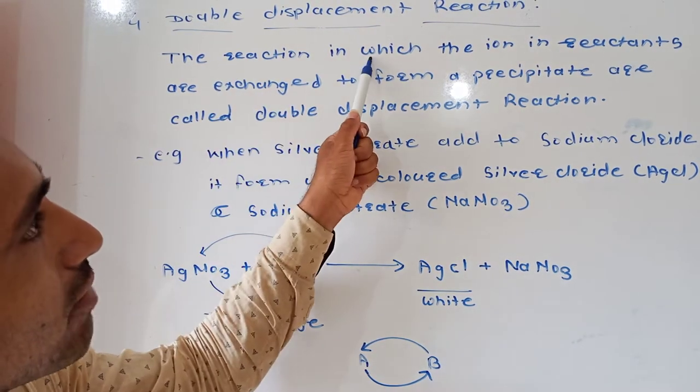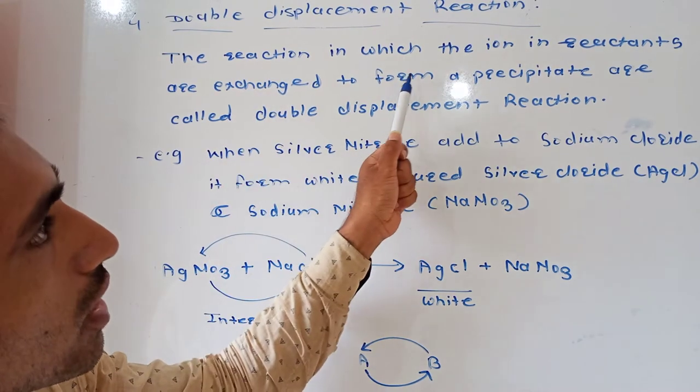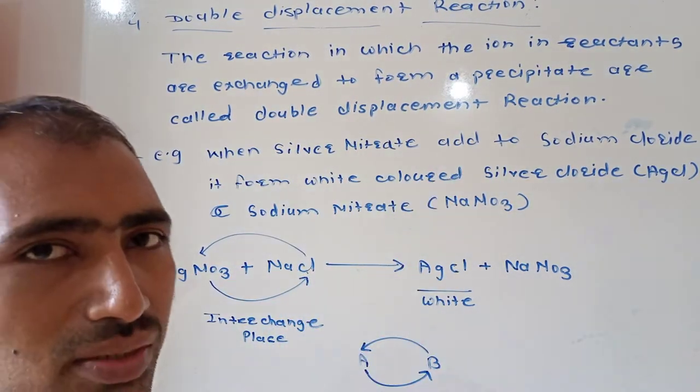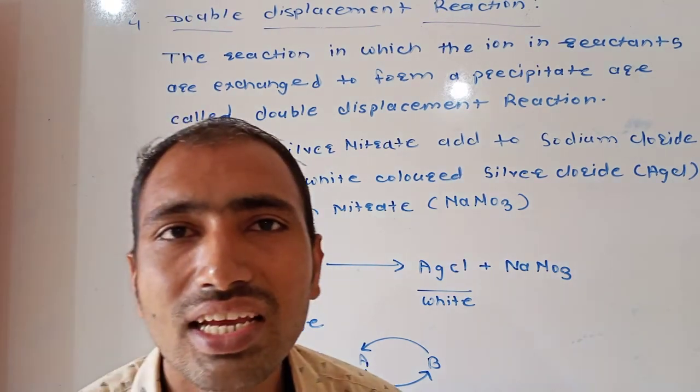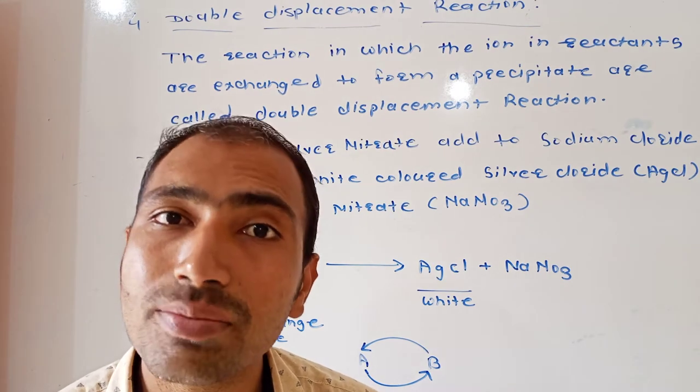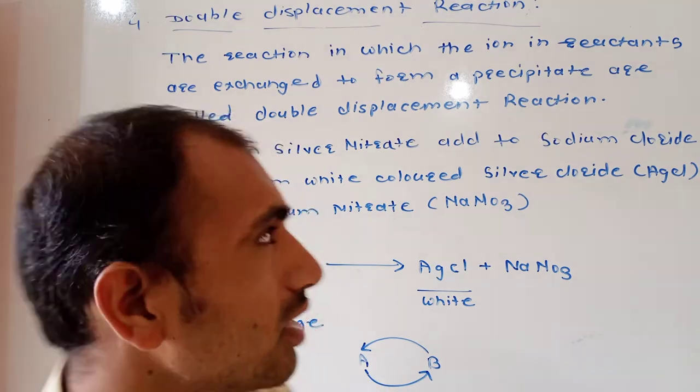Ashi reaction ki jamade reactant cha ion exchange hoto, anit tayar hoto precipitate. Jaha reaction mandhe reactant cha ion exchange hoto, anit white color sa precipitate form hoto. Ashi reaction laa double displacement reaction asa manthat.